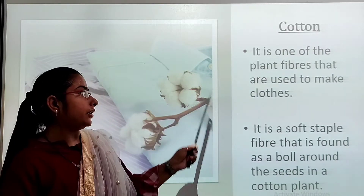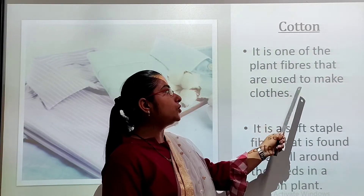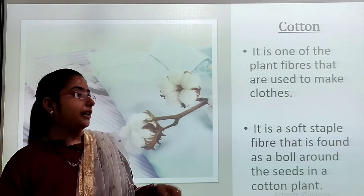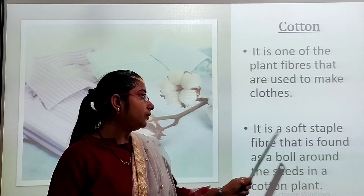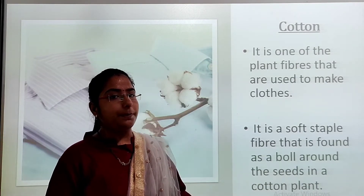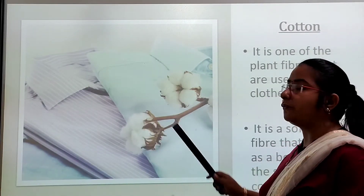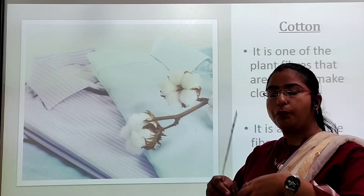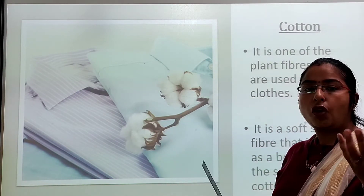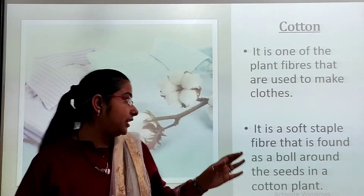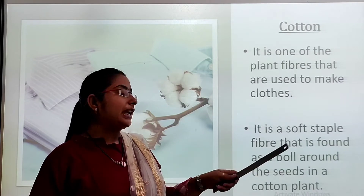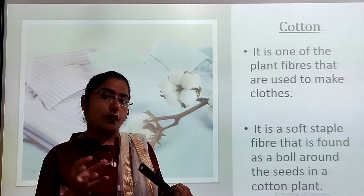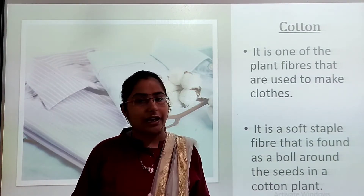Now we will see about cotton. Cotton is a plant fiber used to make fabric. Cotton fiber is grown in the form of a ball. When the cotton plant flowers, a ball-type shape forms and then the ball bursts. We get the cotton from that ball. So cotton is a soft fiber, ball-shaped. After it flowers, the ball bursts and we get the cotton.